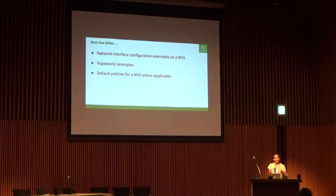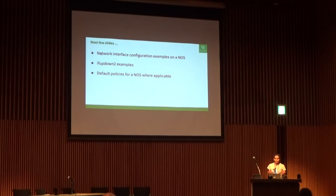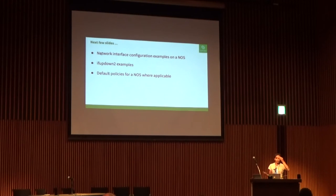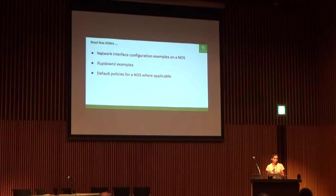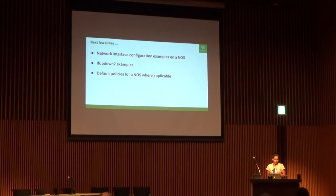ifupdown2 has become a sort of buffer. People at Cumulus usually come to me thinking it's a kernel problem, and ifupdown2 has been a nice buffer — 'oh no, you can solve this problem outside the kernel in ifupdown2 via policy.' In general, if any of my kernel patches get rejected, they end up as Python code in ifupdown2.